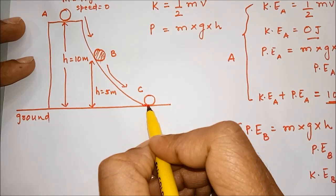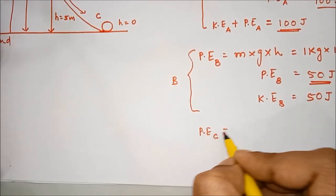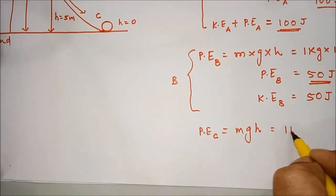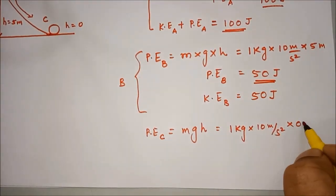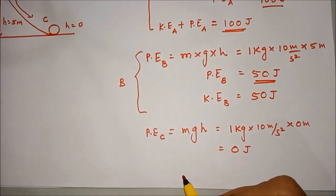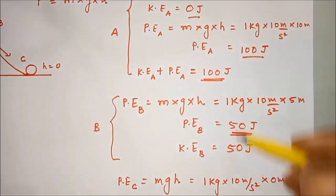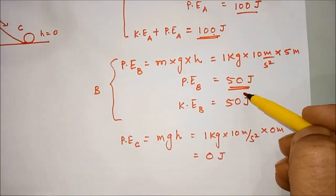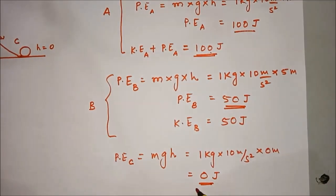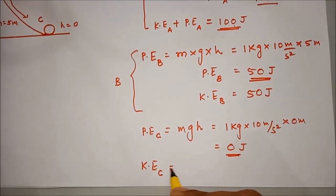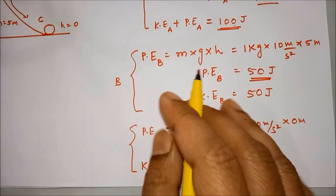For point C, C is on the ground, so here the height is 0. For C, potential energy at C equals mgh: mass is 1 kilogram, g is 10 meter per second squared, and height is 0 meter. So the potential energy is 0 joule. The sum should always remain 100 joule. So as we go down from higher height to lower height, potential energy decreased from 100 to 50 and from 50 to 0, and kinetic energy increased from 0 to 50 and now to 100 joule at point C. It is because the sum at all points must remain constant. These are the calculations at point C.